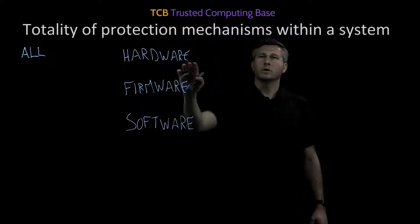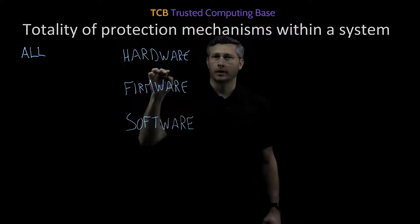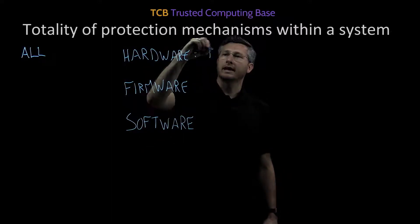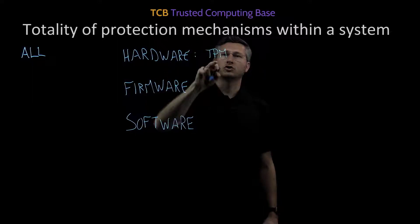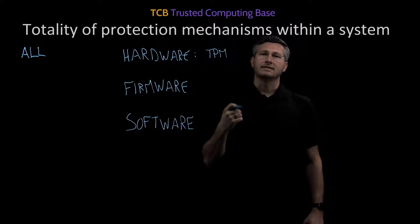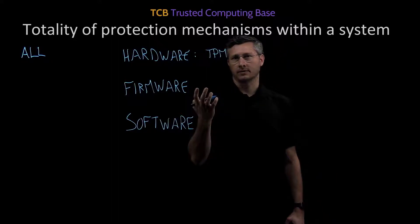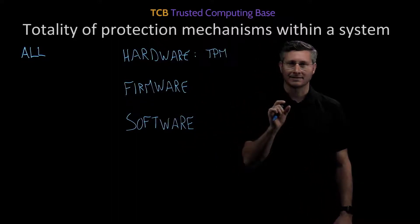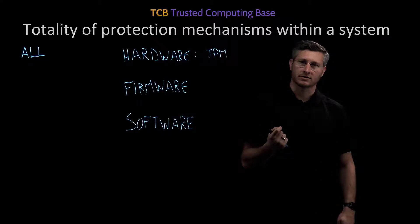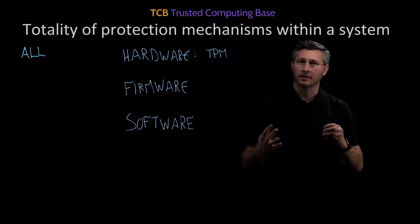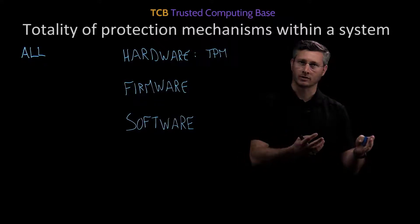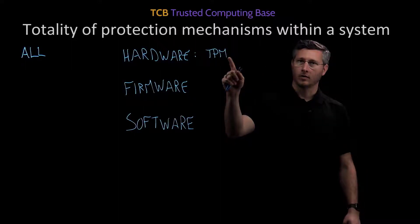When we say hardware, what's an example of a hardware protection mechanism? A good example might be something like a TPM, a Trusted Platform Module — a secure crypto processor. This is the little chip that gets installed in things like laptops, where encryption keys are securely stored. Whenever you have something like whole drive encryption, those encryption keys need to be securely stored somewhere, and they're stored on the TPM.